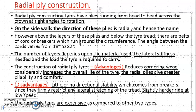The main advantages of radial ply construction are: it reduces cornering wear, it increases the overall life of the tyre, and the radial plies give greater pliability and comfort. Greater pliability means you can place one ply over another and it becomes a good unit, better compared to previous constructions.